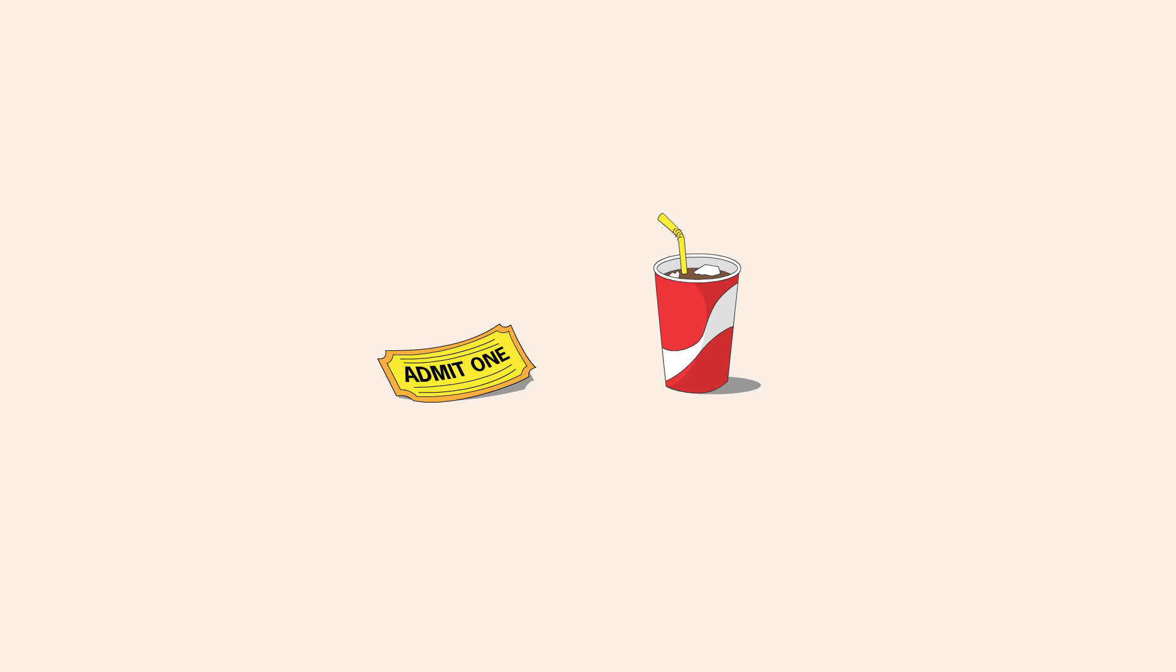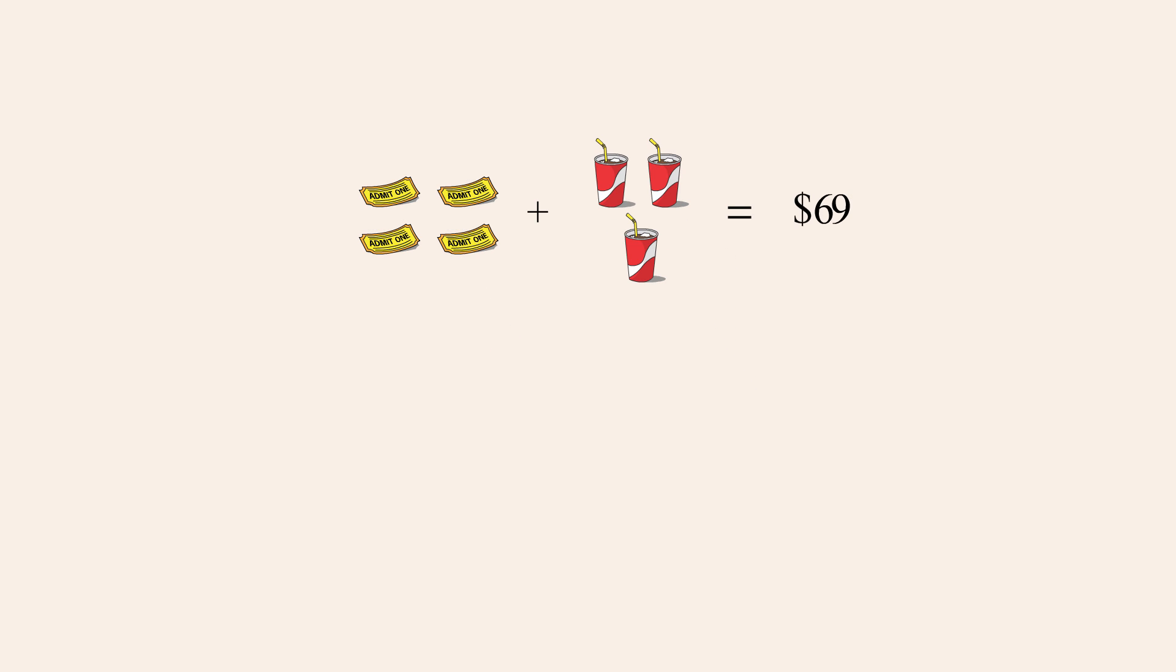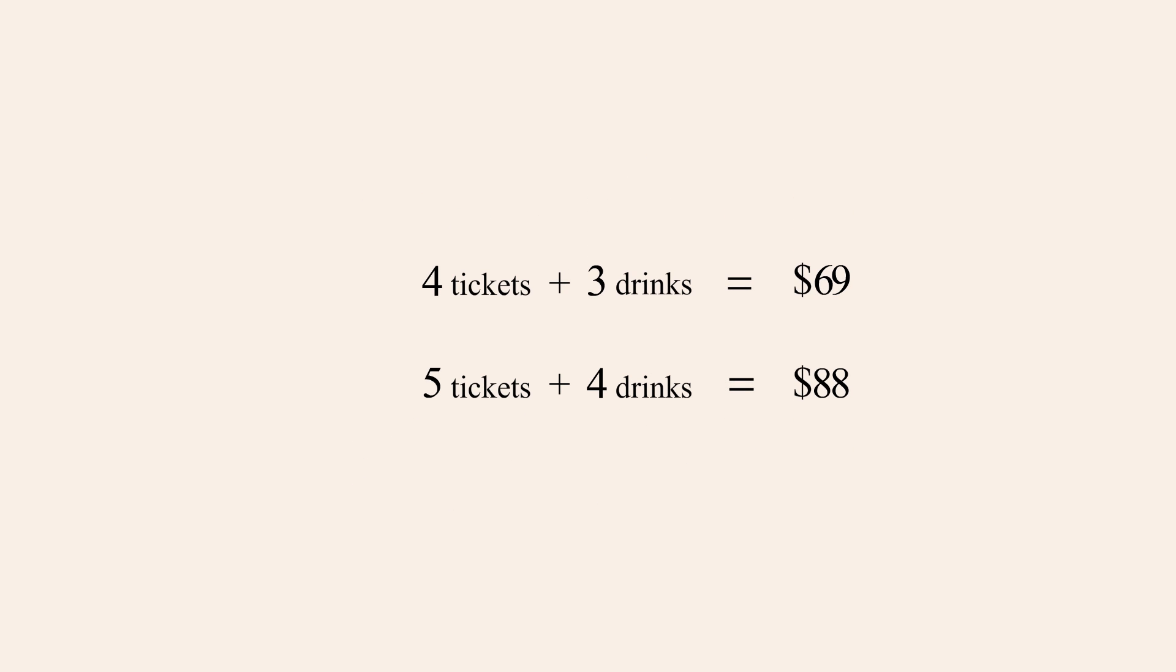In the lecture entitled Using Systems of Equations vs. One Equation, we were presented with a problem involving two groups of people buying movie tickets and drinks. The first group spent $69 on four movie tickets and three drinks and the second group spent $88 on five movie tickets and four drinks. To calculate the price of a ticket and the price of a drink, we created a system of two equations in two variables, letting t represent the ticket price and d represent the price of a drink.